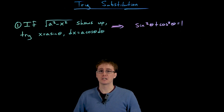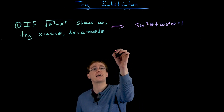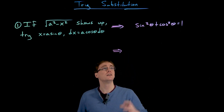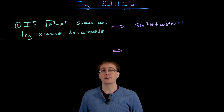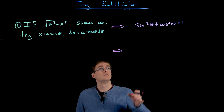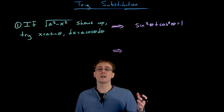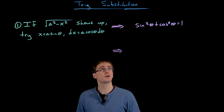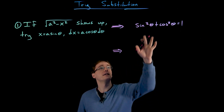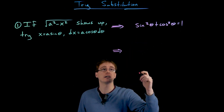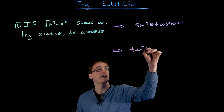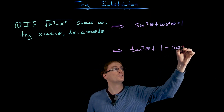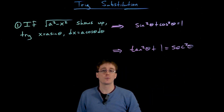There are other types of trigonometric substitutions, and the way they are derived is by going through the same process with our other Pythagorean identities. Sine squared of theta plus cosine squared of theta equals one is the most popular version, but if we divide both sides by cosine squared we get another really important identity: tangent squared of theta plus one is equal to secant squared of theta.